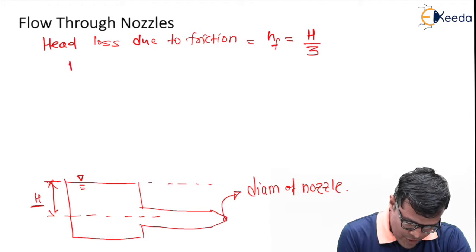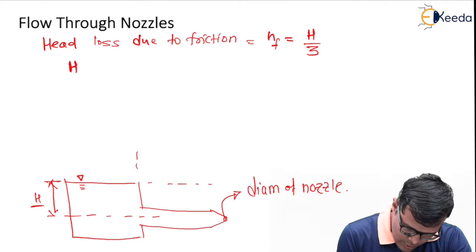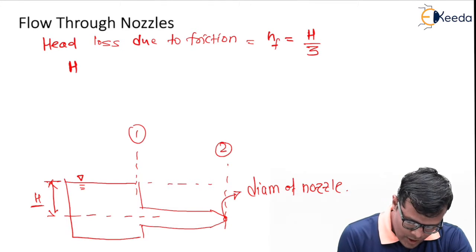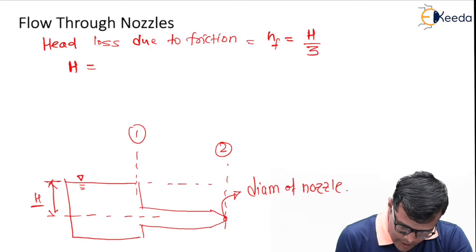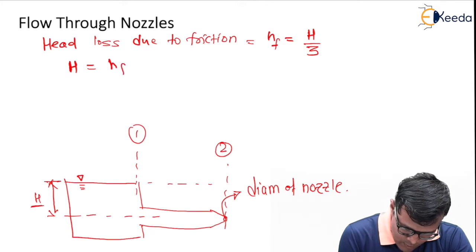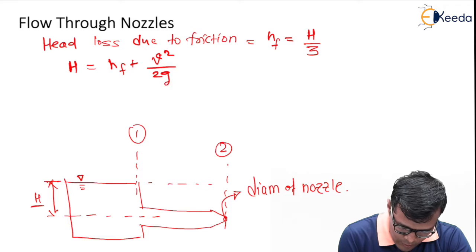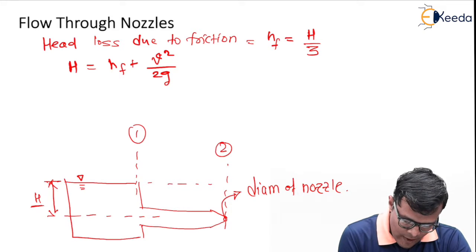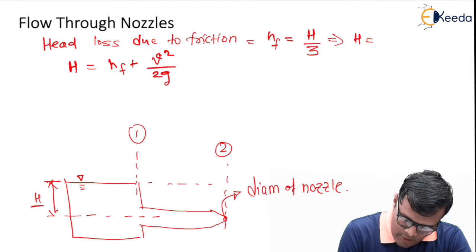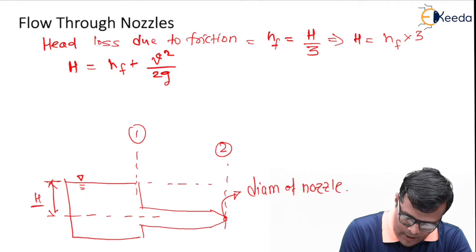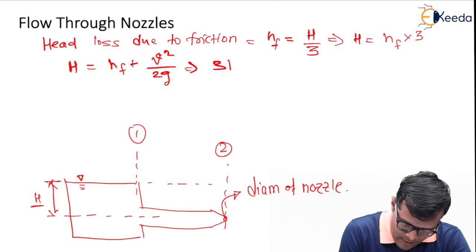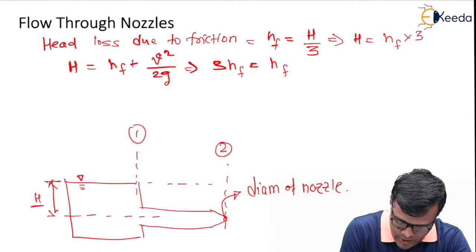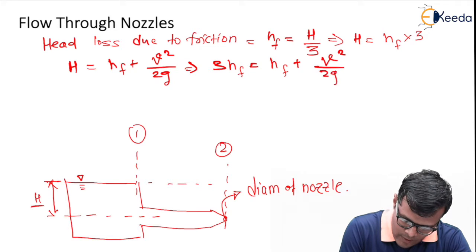Total energy at section 1 equals total energy at section 2. At section 1, total energy is capital H. At section 2, total energy is Hf plus v² upon 2g, where small v is the velocity through the nozzle. So our equation becomes: H equals Hf plus v² upon 2g, and since H equals 3Hf, we have 3Hf equals Hf plus v² upon 2g.